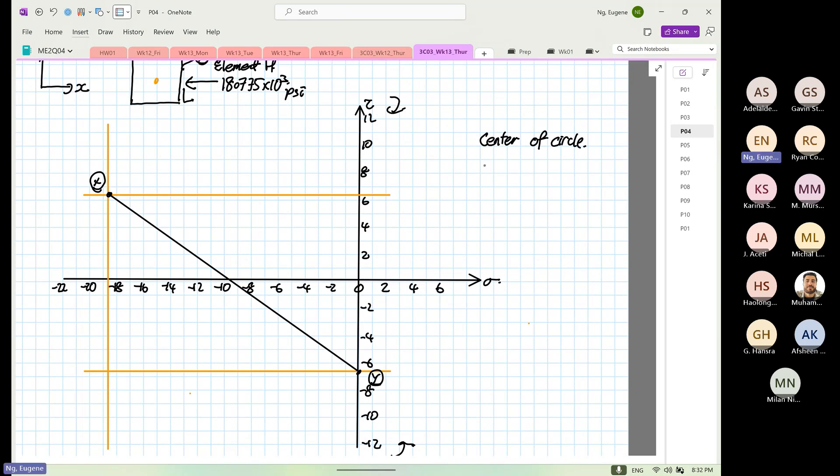So center of circle is your stress average. This will be equal to minus 18.775 times 10 to the power of 3, plus 0, divided by 2. So 18.775 divided by 2 is 9.3875. So minus 9.388 times 10 to the power of 3 psi. That is our average stress.